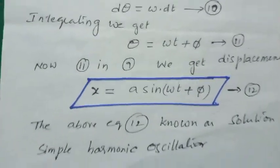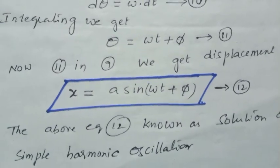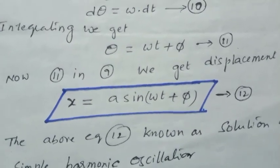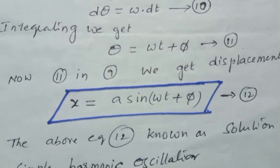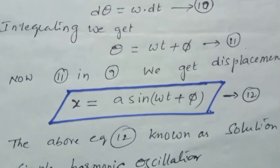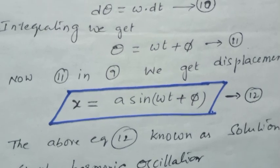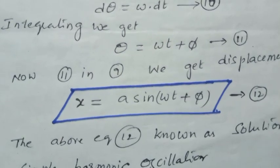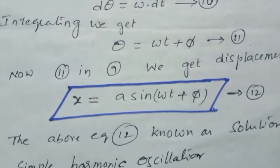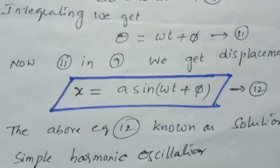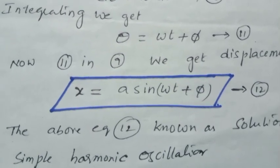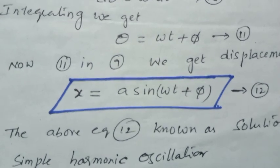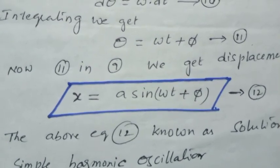Once we obtain the displacement equation, it is easy to find the acceleration, the force acting on the oscillator, the time period, angular acceleration, kinetic energy, potential energy, and so on. That's why it is called the solution of a simple harmonic oscillator. I hope you understand this topic. If you have any doubts, please comment in the comment section and I will give clarification. Thank you.